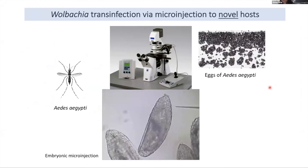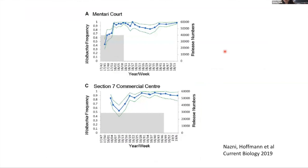Wolbachia has recently been introduced into dengue vector mosquitoes such as Aedes aegypti and Aedes albopictus through microinjection, initially using a Wolbachia strain found in Drosophila melanogaster. For microinjection, we use a very fine glass needle to pipette hemolymph from a donor and then inject it into a recipient embryo under a microscope. The introduction of Wolbachia into these mosquitoes reduces their ability to spread disease among human populations by either suppressing the population or by directly blocking the mosquito's dengue transmission ability.